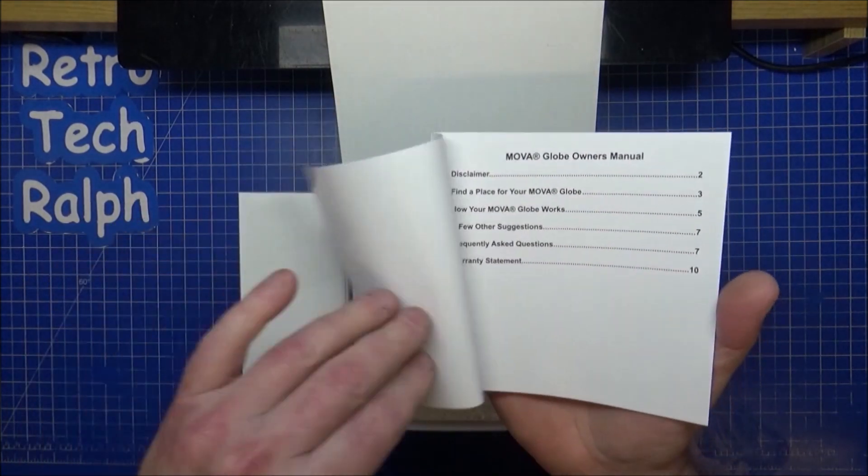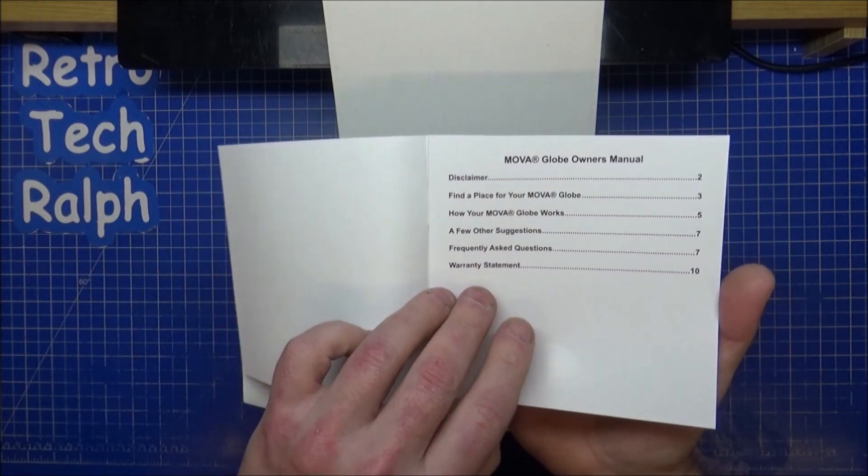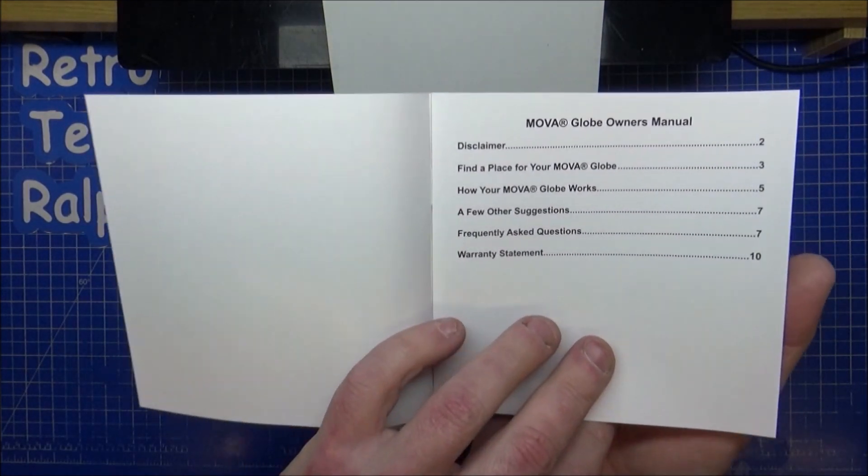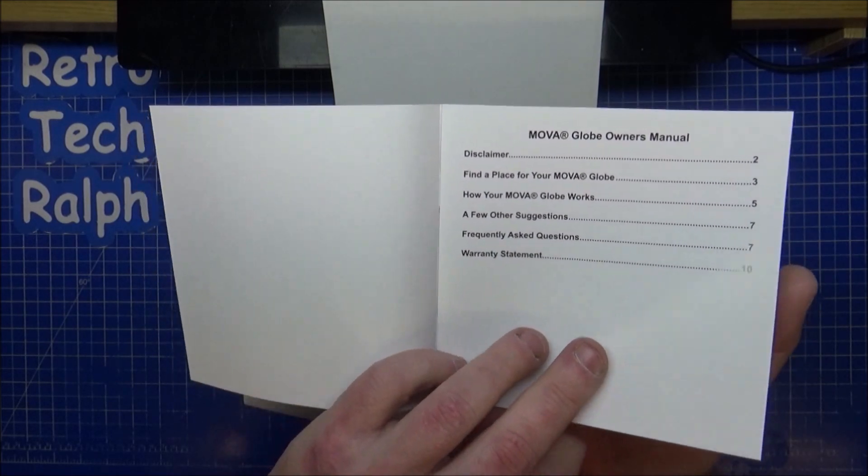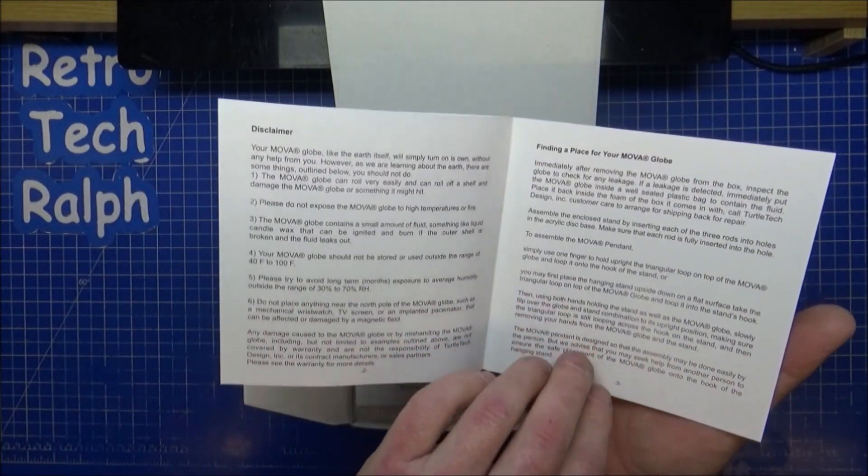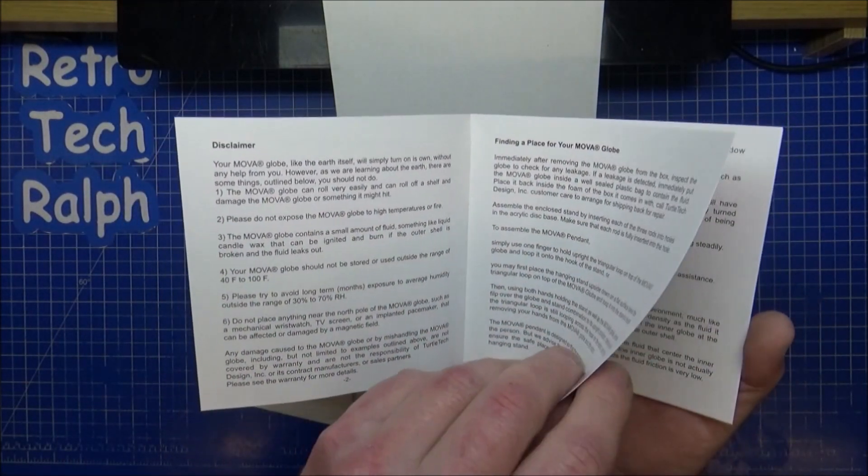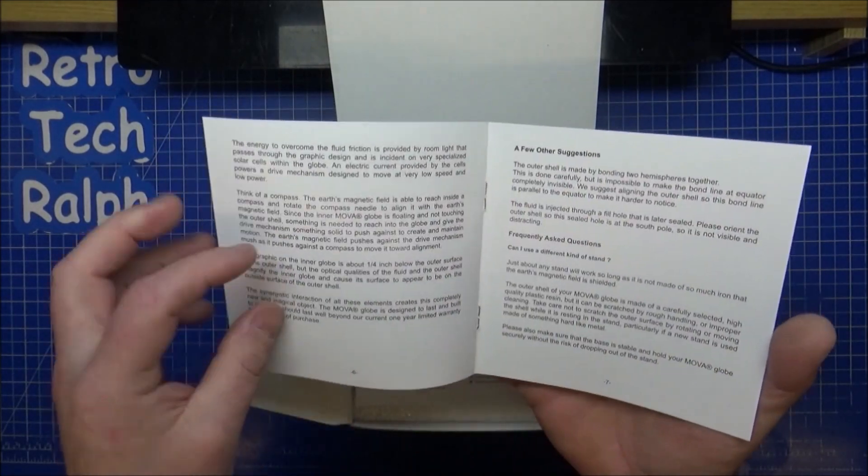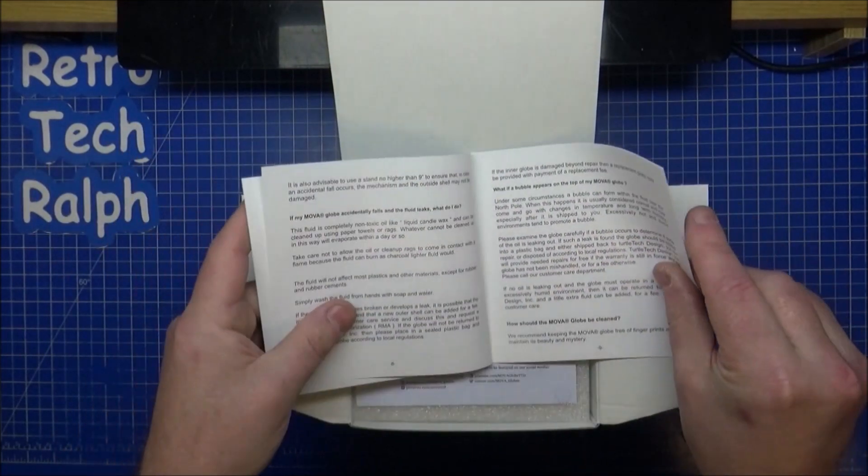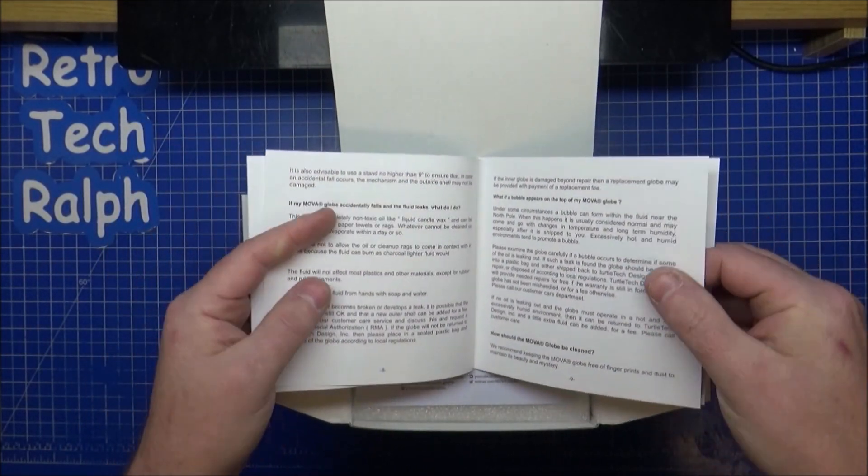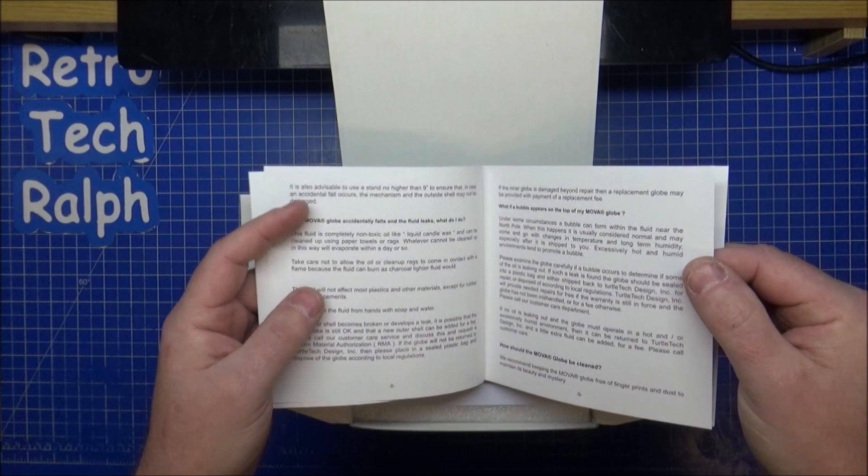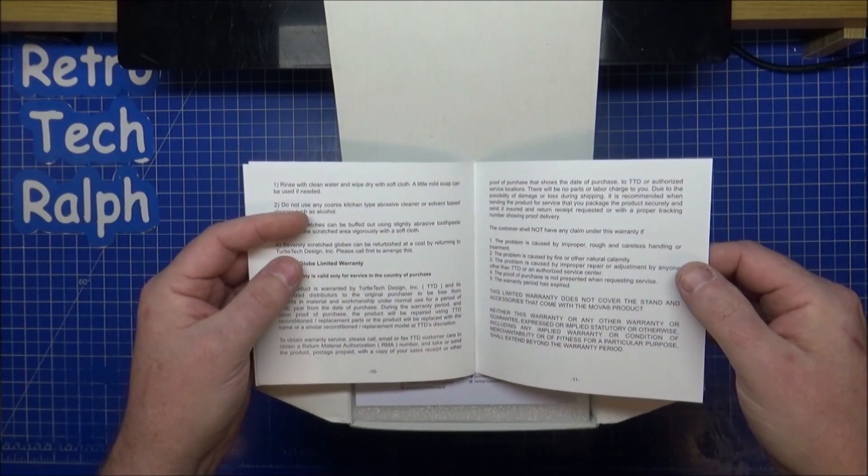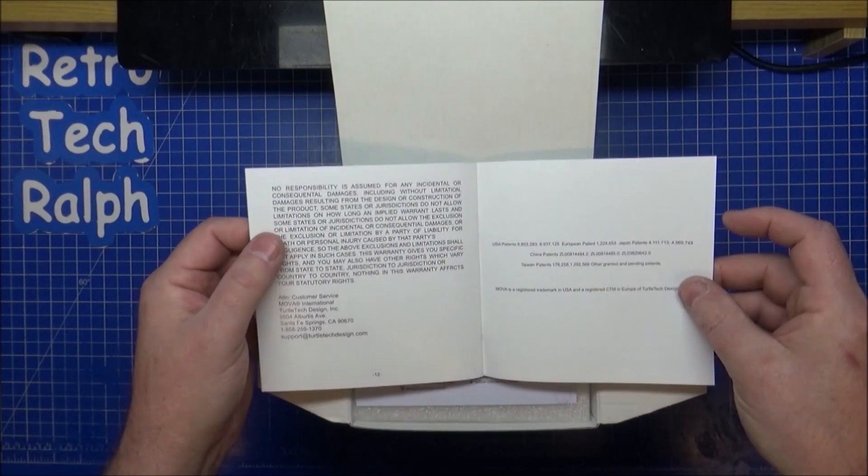First we see the user manual, individually numbered. Shows you disclaimer, how to place your globe, how to use, suggestions, frequently asked questions, and warranty statement. The usual stuff—please don't boil it, don't set it on fire, don't place in direct sunlight, don't eat it. Usual stuff that if you haven't got any common sense, you'll have no idea.